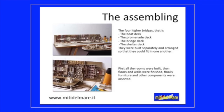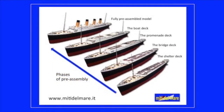The assembling. The four higher decks — the boat deck, the promenade deck, the bridge deck, and the shelter deck — were built separately and arranged so that they could fit into one another. First all the rooms were built, then floors and walls were finished, and finally furniture and other components were inserted. The fully pre-assembled model comprised the boat deck, the promenade deck, the bridge deck, and the shelter deck.